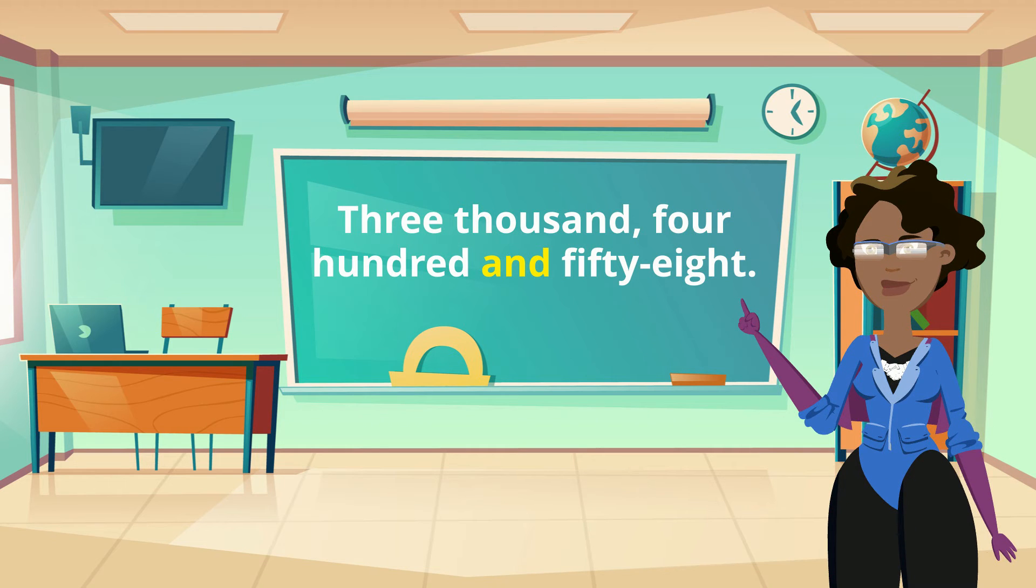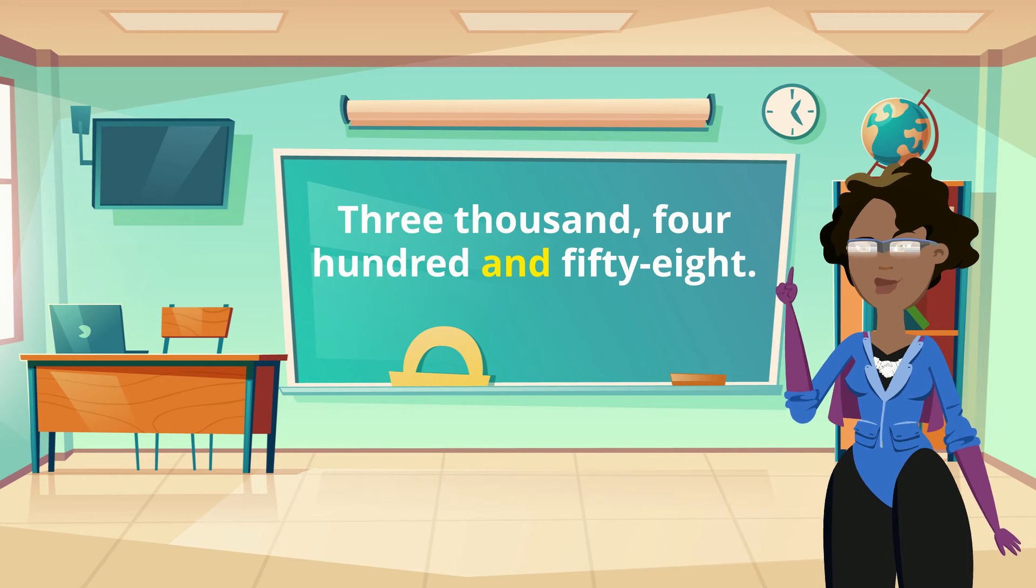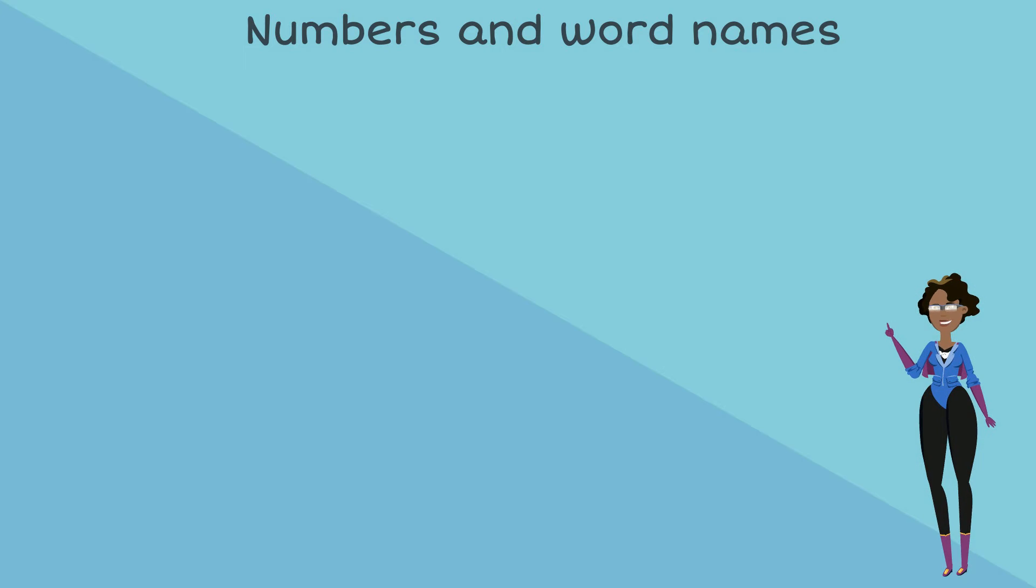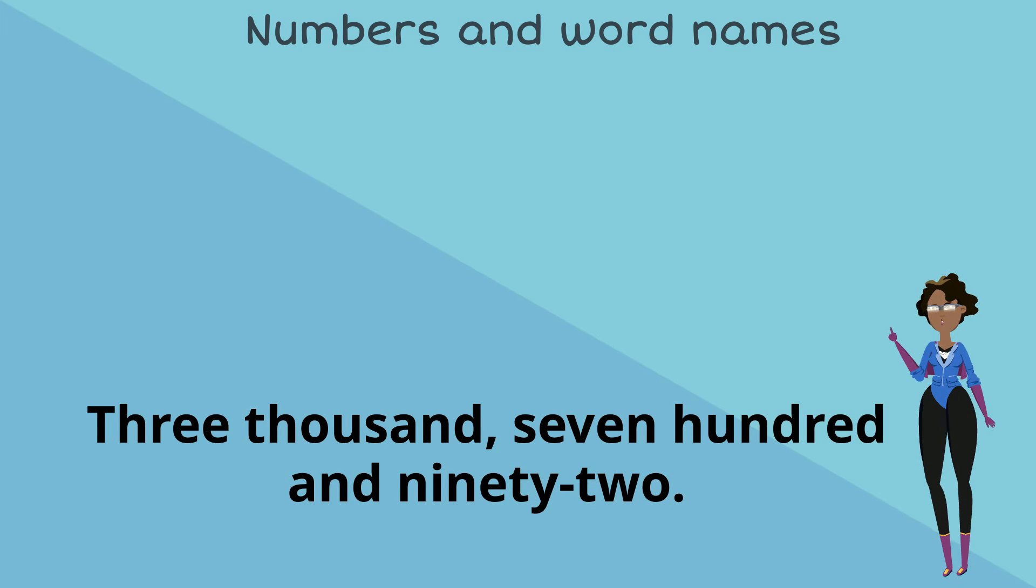Let's try another, but using the word name to get the numerical form. We're looking at the number three thousand, seven hundred and ninety-two in words. So let's figure out what numerical value of what numbers represent these words.